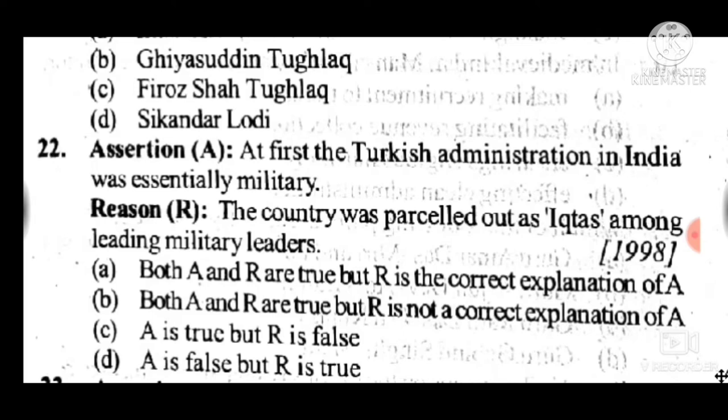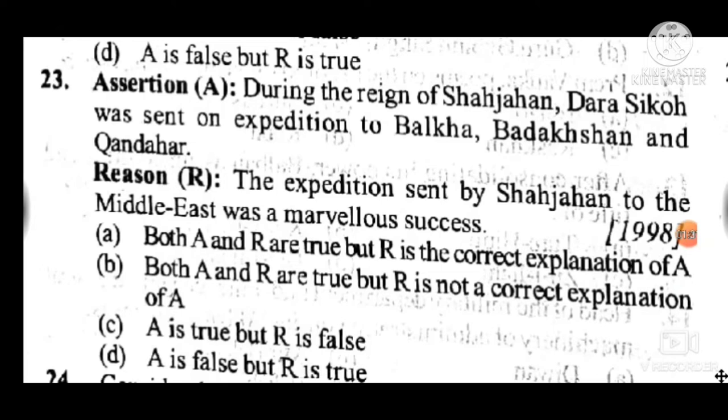Question 23: Assertion — during the reign of Shah Jahan, Dara Shukoh was sent on expedition to Balkh, Badakhshan, and Kandahar region. Reason — the expeditions sent by Shah Jahan to the Middle East were a marvellous success. Answer is C — A is true but R is false.